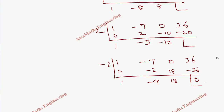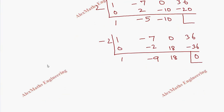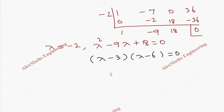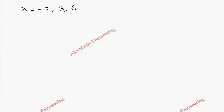With lambda equals minus 2 confirmed, the remaining quadratic factor is lambda squared minus 9 lambda plus 18 equals 0. The product is 18 and sum is minus 9, so this factors as (lambda minus 3)(lambda minus 6) equals 0. Therefore the three eigenvalues are lambda equals minus 2, 3, and 6.